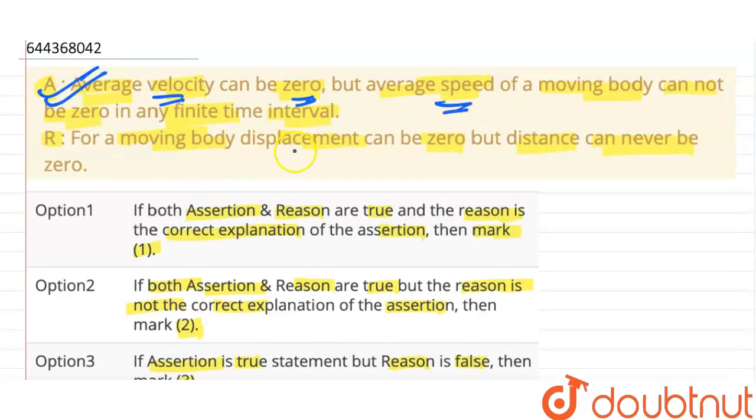Assertion is true. For a moving body, displacement can be zero but distance can never be zero. Why? Because distance is scalar quantity.